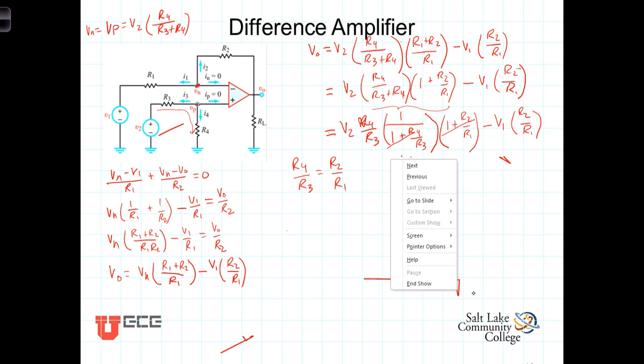And we're left with simply then V out is equal to V2 times, again R4 over R3 equals R2 over R1, so let's replace it here also, R2 over R1 minus V1 times R2 over R1.